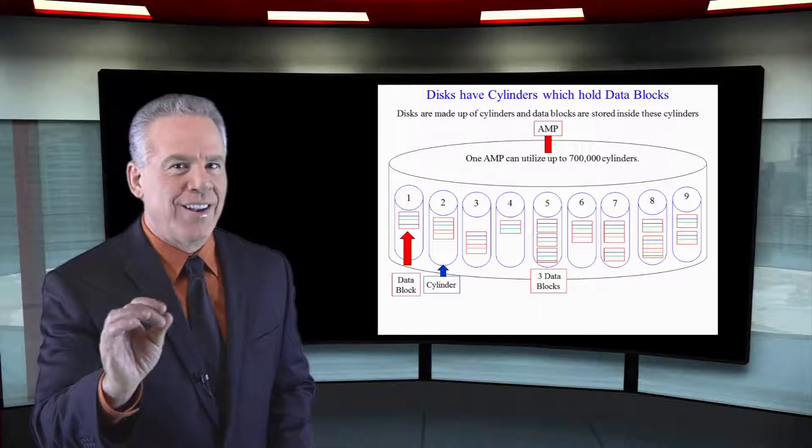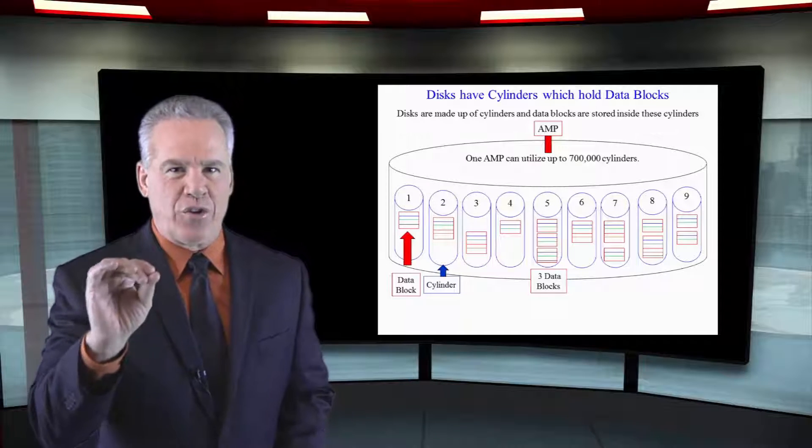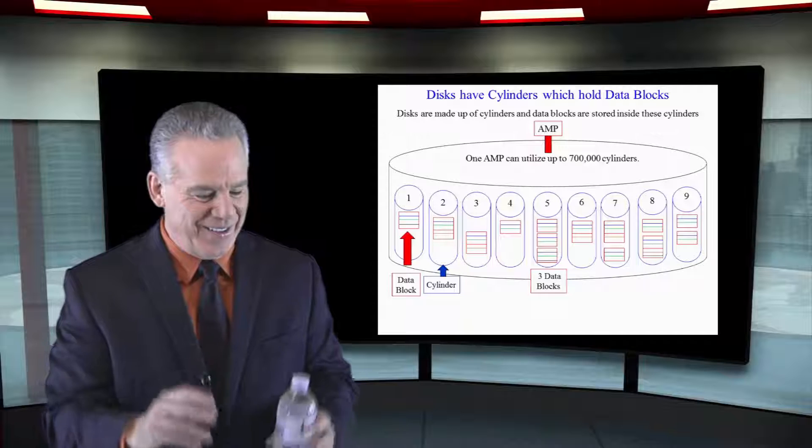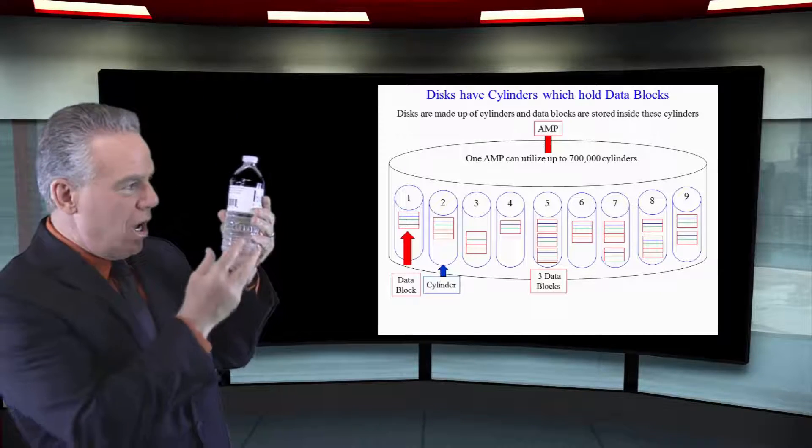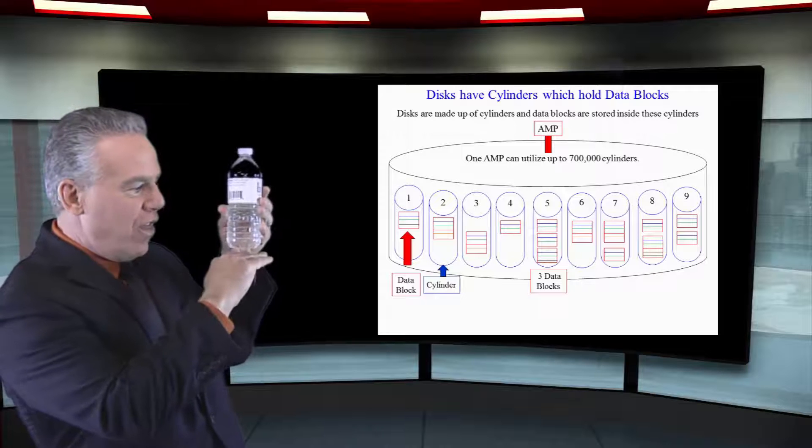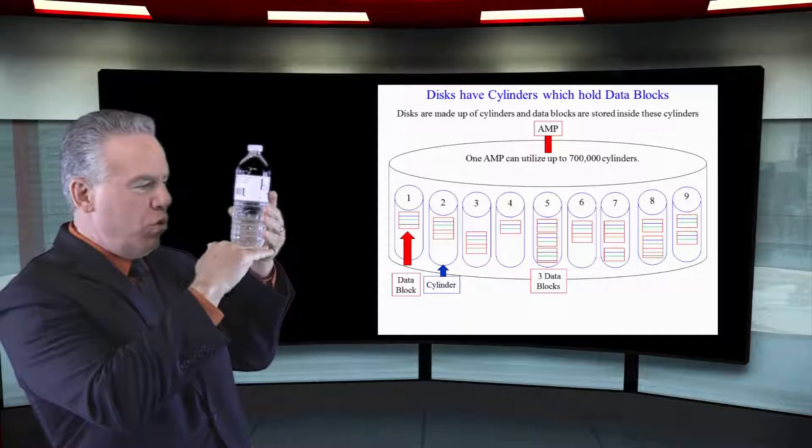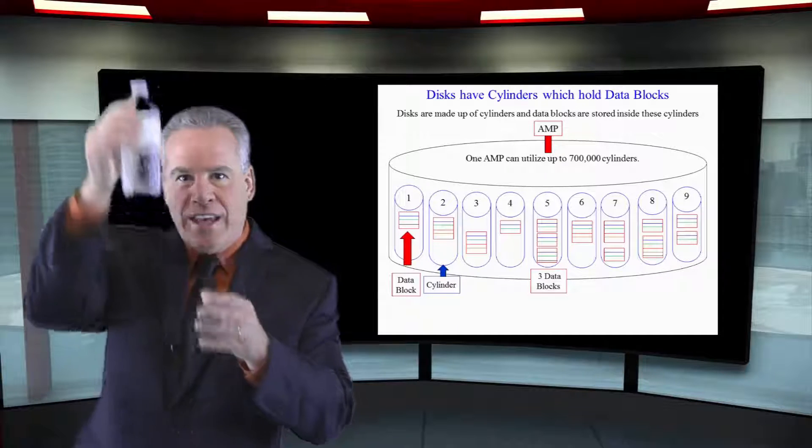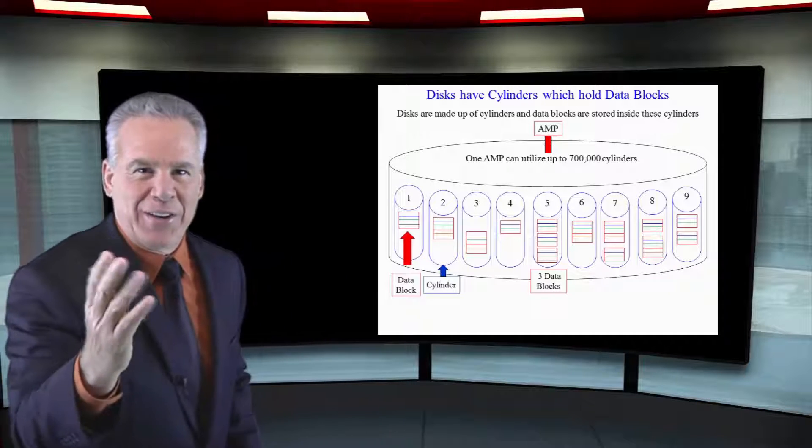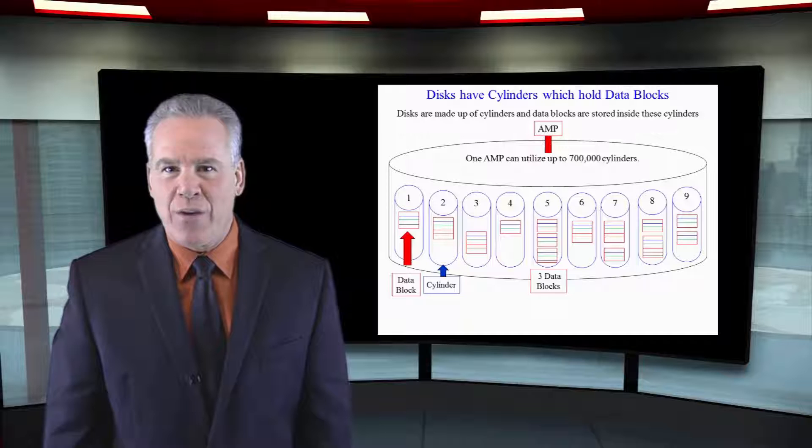Inside every disk are a series of cylinders. We're talking thousands of cylinders. Think of a cylinder as something like this, a container. There's thousands of them that sit almost on a flat surface. When the flat surface spins, they can pull this up into memory and read it. That's the first thing I want you to see.